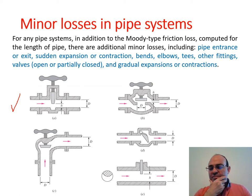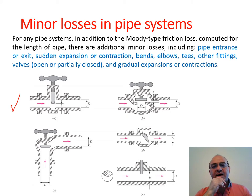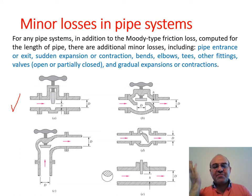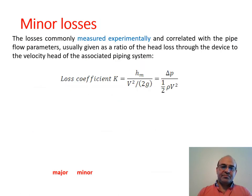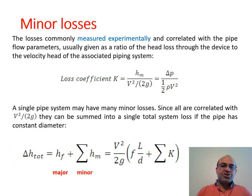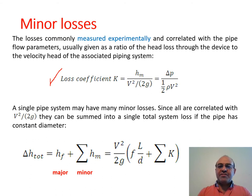There are multiple diagrams, graphs, curves, and tables for finding minor losses. These curves are usually found by experiments and provided by the manufacturers of each component. For example, when you buy a valve, the manufacturer supplies the characteristic curve and all specifications for that valve.